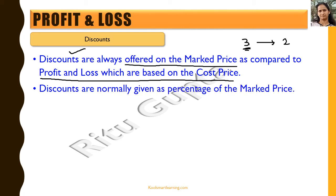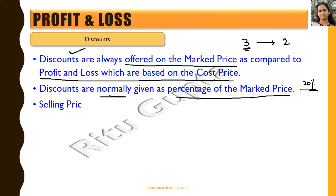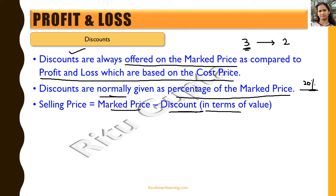Discount is always offered on the marked price, and it is normally given as a percentage of the marked price — for example, 20% discount. It is rarely a fixed amount, though that sometimes happens too. Selling price equals marked price minus the discount. If discount is given as a percentage, we find its value first: for example, 20% of marked price = (20/100) × marked price, and then subtract that from the marked price to get the selling price.